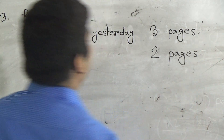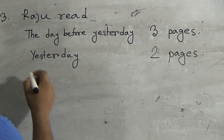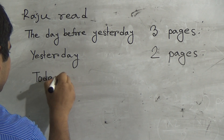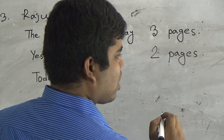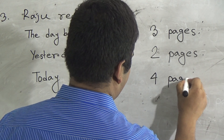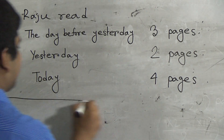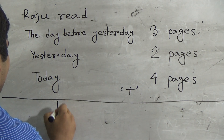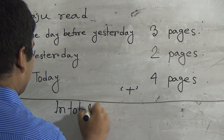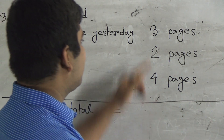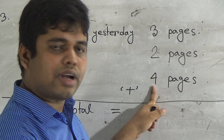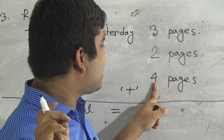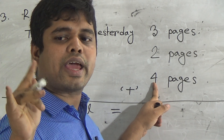Now, today he read four pages. We do addition in order to find out the total number of pages. Here you must give the plus sign, and write 'in total' with an equal sign. Now we do addition: three plus two equals five, and five plus four equals nine.